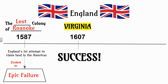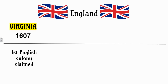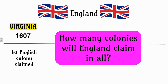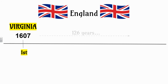King James I decided to try again pretty much right where the Queen had originally tried. That will take place 20 years after Roanoke, in 1607, and this will become a success for England. That location is Virginia, named after Queen Elizabeth herself, and that will be when England claims their very first colony. So in 1607, England will claim colony number one, and they will eventually claim all 13 colonies.